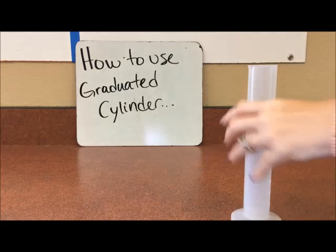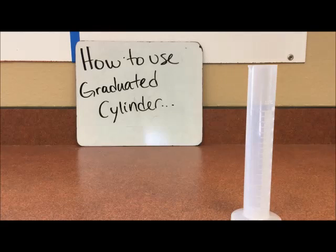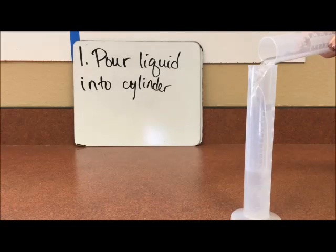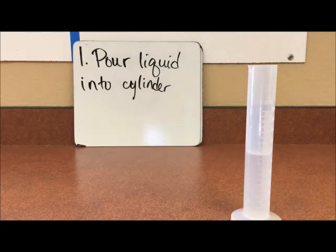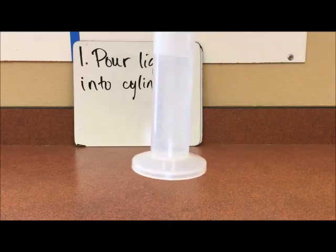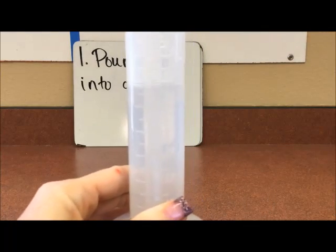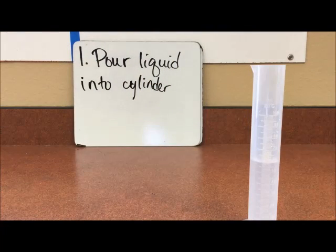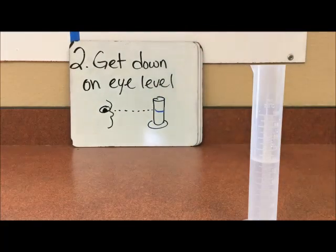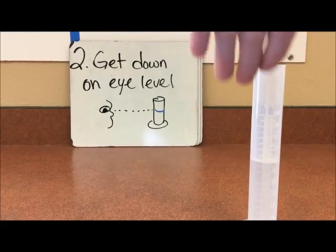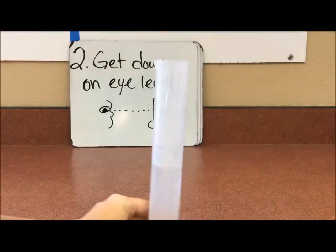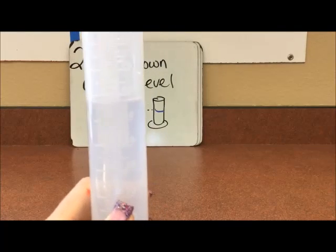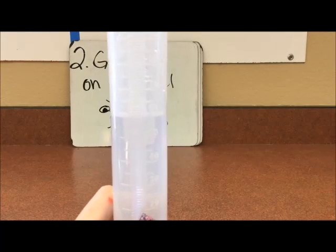So step one: we need to pour our liquid into the container. Okay, so this part's pretty easy. This tool is actually pretty friendly to use, so I'm going to pull it up here so that you guys can have a little look-see at what it looks like when we pour the liquid into the container. Step two: we need to get on eye level. We don't want to read this from way up high or way down low—we want to be on eye level with our water. So let's see if I can get you on the eye level with the camera.